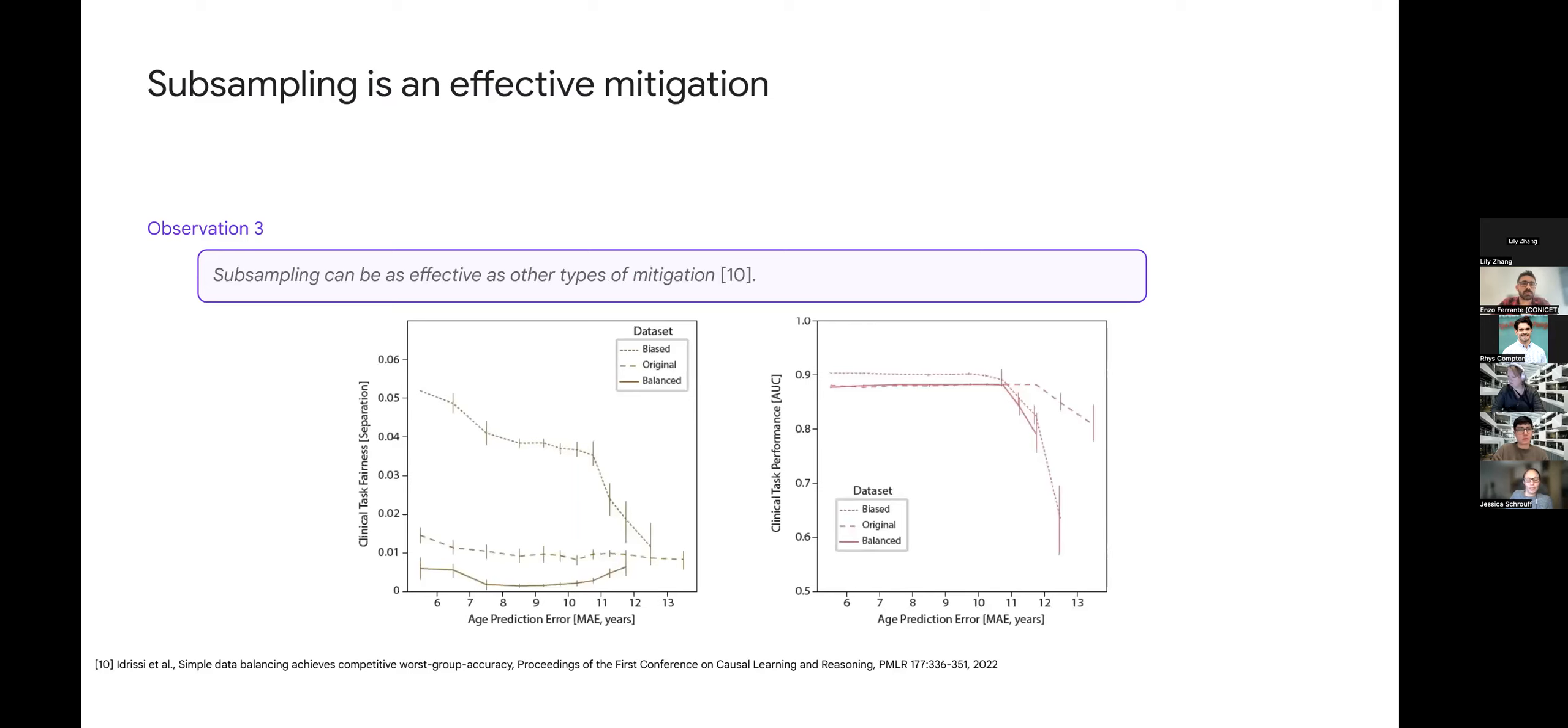A secondary observation is that subsampling is quite effective. In this case, because adversarial learning can be quite difficult to pinpoint in terms of hyperparameters, subsampling here actually outperforms it. We are able to have models with really high performance on a smaller sample of the dataset if balancing is done correctly. This is also observed in other cases, not related to medical imaging, in this paper by Idris C. et al.